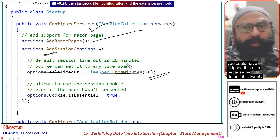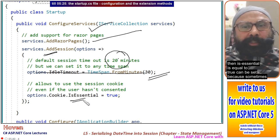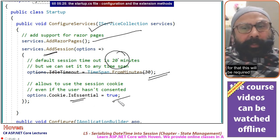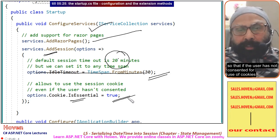You could have skipped this also because by default it is 20. Then IsEssential equals true can be set because sometimes the user has not given consent to your cookies. For that this will be required so that if the user has not consented for use of cookies